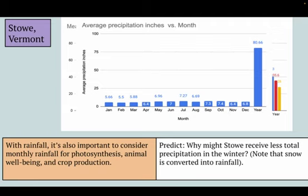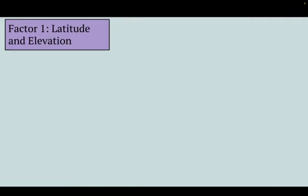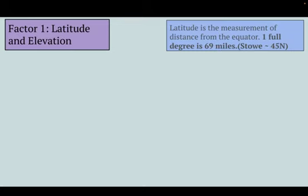Now that we've talked about temperature and precipitation profiles, let's take a look at the three main factors that make an ecosystem have its different characteristics. This is what we call a climograph — you'll be making these for your homework. The first factor is latitude and elevation. Latitude is the measurement of distance away from the equator; one full degree is approximately 69 miles. Stowe is at 45 degrees north latitude, so you'd take 45 and multiply it by 69 to get how many miles away we are from the equator.